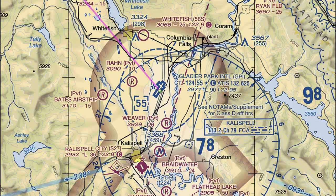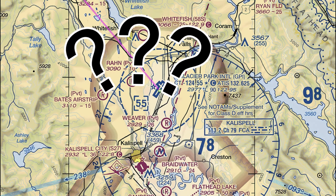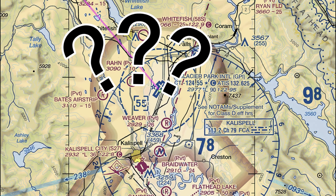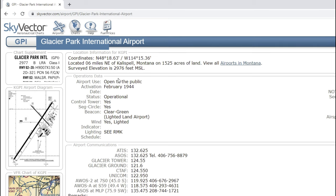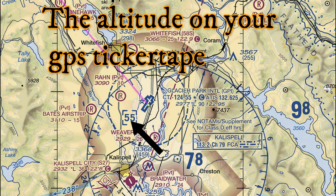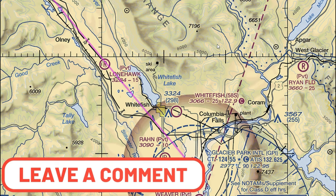Keep in mind that Class D airspace extends from ground level to approximately 2,500 feet above ground level. This particular airspace shows 5,500 feet MSL — not AGL — because the surveyed elevation at Glacier Park International is about 3,000 feet. So 5,500 feet MSL equals roughly 2,500 feet AGL. If you have questions, post them in the comments below.